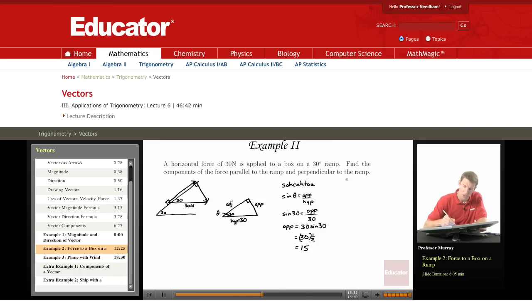To find the adjacent side, I'm going to use the cosine part of SOH CAH TOA. Cosine is equal to adjacent over hypotenuse. So cosine of 30 is equal to the adjacent divided by the hypotenuse which is 30. If I solve that for the adjacent side, I get 30 cosine 30.